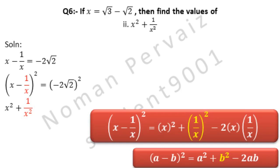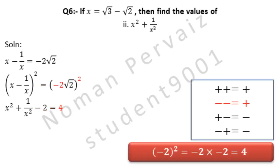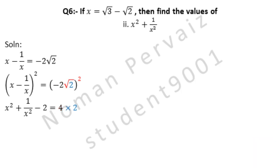Minus 2 comes from the formula, and x is cancelled with x, so minus 2 is left. On the right side, minus 2 square is opened: minus times minus is plus, so 2 twos are 4. Square and square root cancel, leaving only 2. So x² + 1 over x² equals: minus 2 is moved to the other side, becoming plus 2. 4 times 2 is 8, and 8 plus 2 is 10. Hence this is our answer.